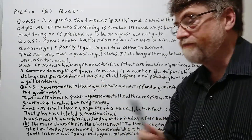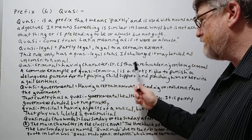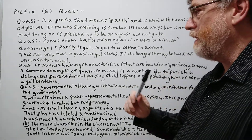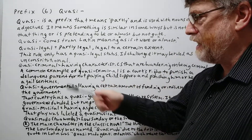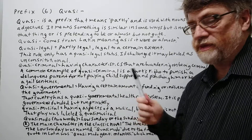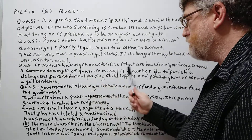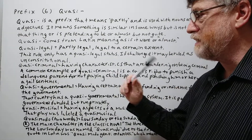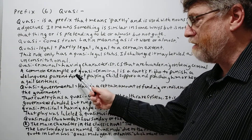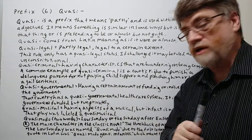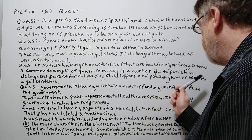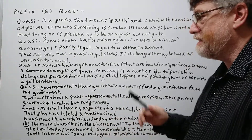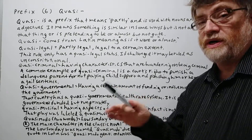Next: quasi criminal — having characteristics that border on being criminal. A common example of quasi criminal is the court's right to punish a delinquent parent for not paying child support by sentencing him or her to jail. This is quasi criminal.